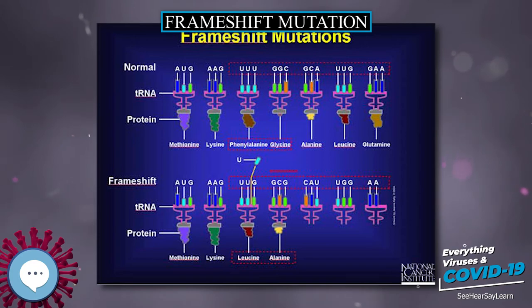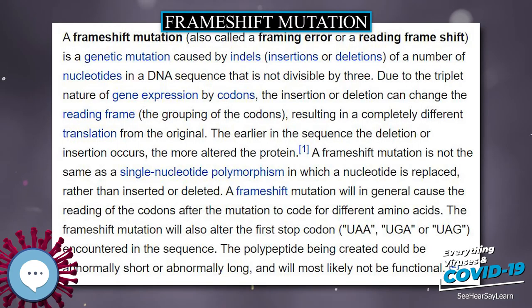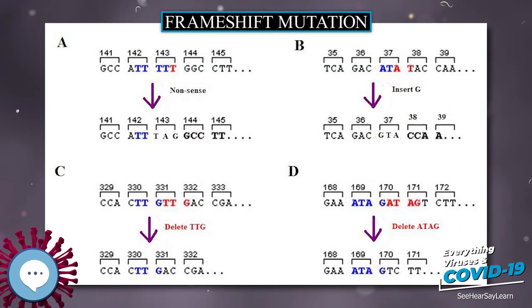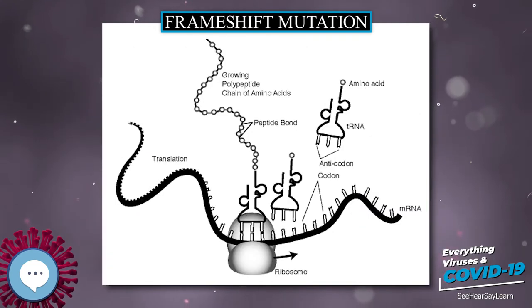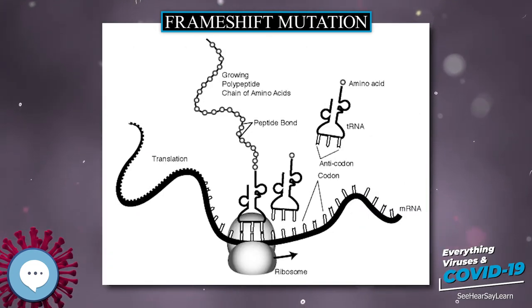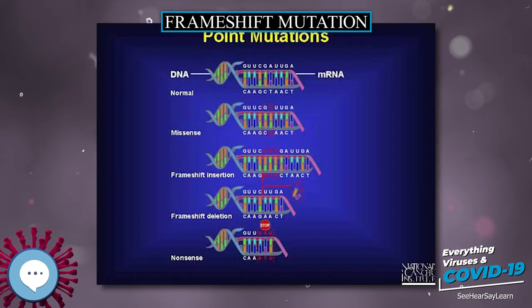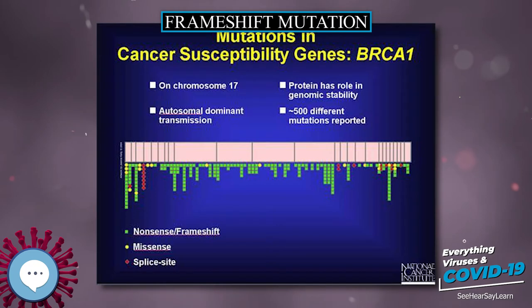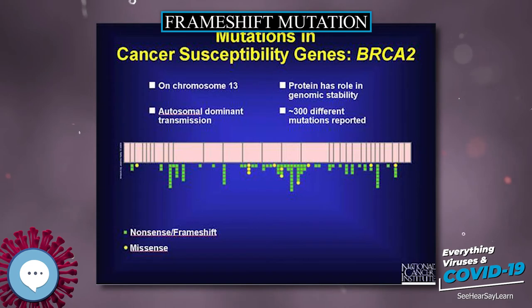A codon is a set of three nucleotides — a triplet — that codes for a certain amino acid. The first codon establishes the reading frame, whereby a protein's amino acid backbone sequence is defined by contiguous triplets. The reading frame is set when translating the mRNA begins and is maintained as it reads one triplet to the next. The reading of the genetic code is subject to three rules: codons are read in a five-prime to three-prime direction, codons are non-overlapping with no gaps, and the message is translated in a fixed reading frame.